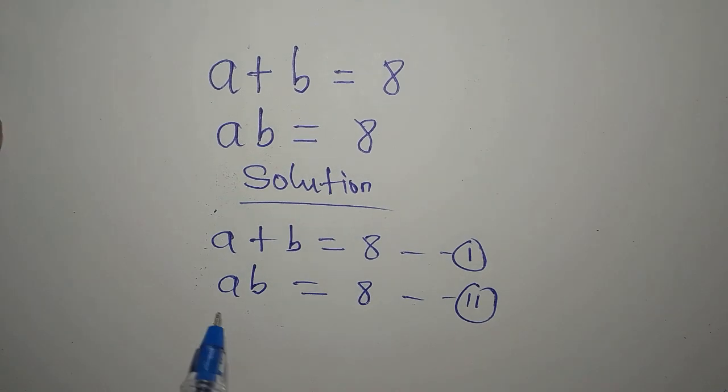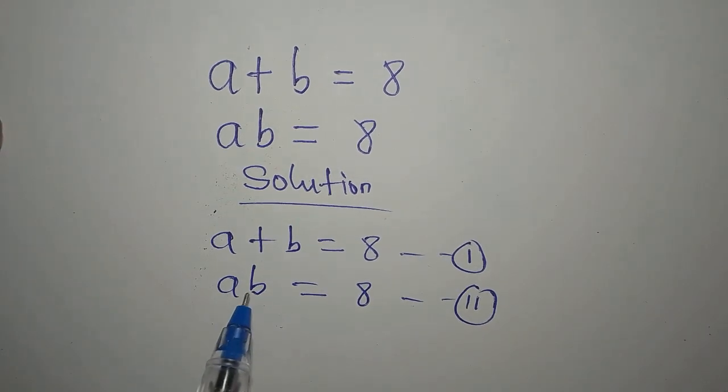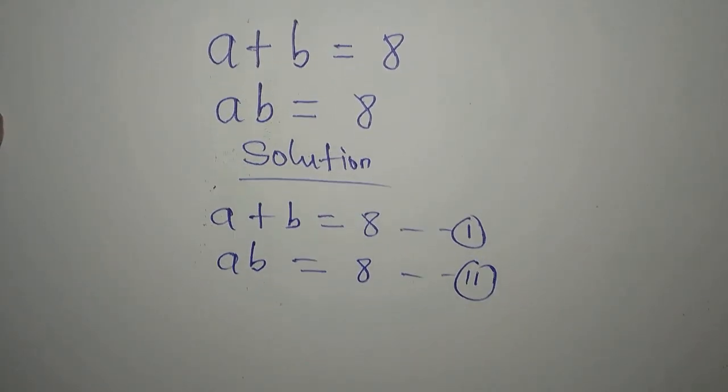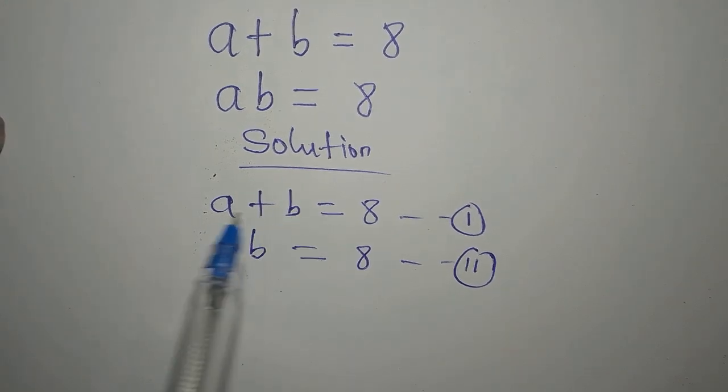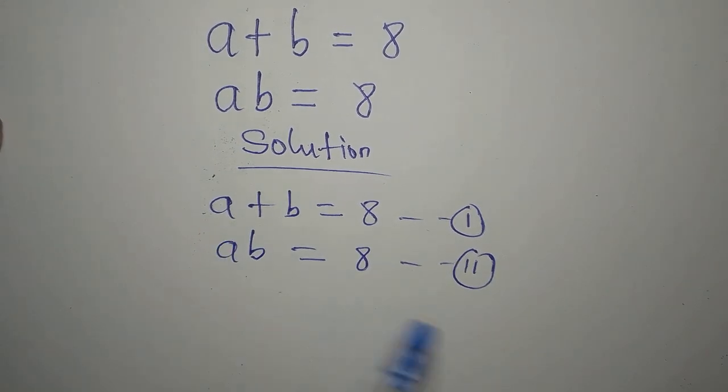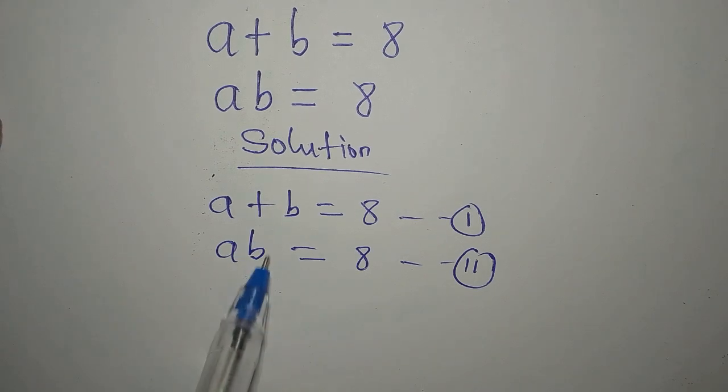And mind you, AB means A times B, right? Now, to solve this, we will have to deal with them simultaneously, because we have two unknowns in one equation. So we'll have to solve both of them simultaneously.